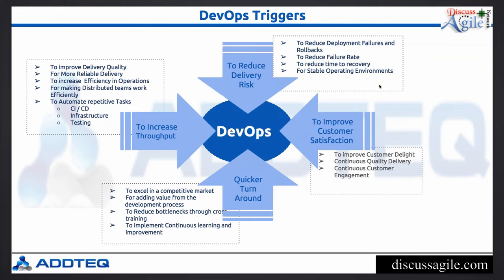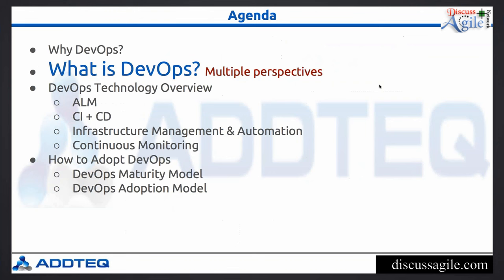Before covering technology factors, let's look at the other DevOps triggers. The major triggers are: increase output, reduce delivery risk, improve customer satisfaction, and quick turnaround. Now that we've established why DevOps is needed, let's look at what DevOps is and its multiple perspectives.